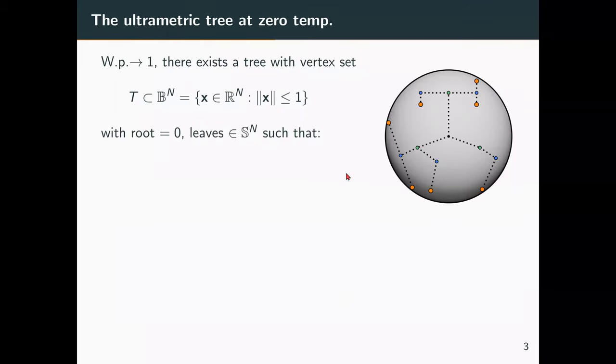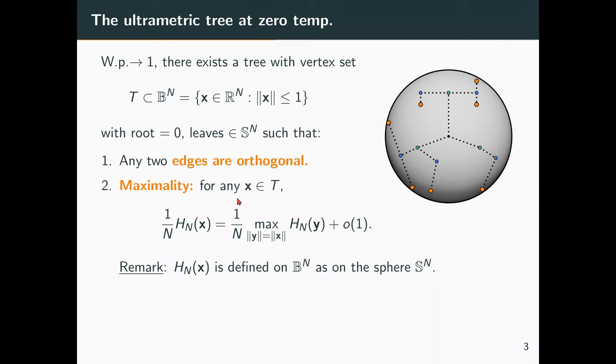Okay, so what I'm going to tell you about in this slide is for any spherical model. So with high probability, there exists a tree whose vertices are points inside the ball and the root is the origin and the leaves of this tree are points of the sphere of radius one. And it has the following properties. First of all, any two edges on this tree are orthogonal. Okay, so this is the maximal orthogonality you can expect in this structure.